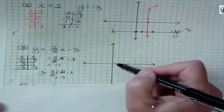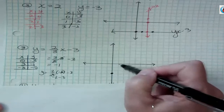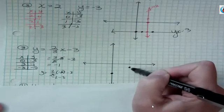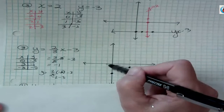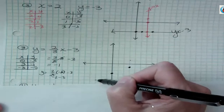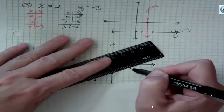So if x is 0, y is negative 3. If x is 3, y is negative 1. And if x is negative 3, it's negative 5. And if I've done this correctly, as always, my 3 points should form a line. Thus, we call them linear equations.